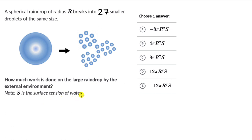As always, pause the video and first attempt this question on your own. Hopefully you have given this a shot. Now let's see what the question is asking us — it is asking how much work is done on this large raindrop by the external environment.